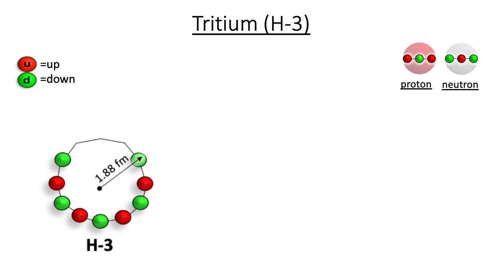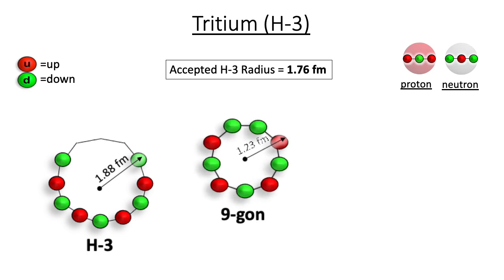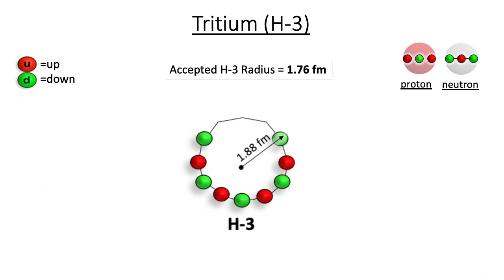Within the alternating quark model, the nine quarks of tritium occupy nine of the twelve vertices of a dodecagon, while the remaining three are unoccupied. This alternating quark structure yields a radius prediction of 1.88 femtometers, a close approximation to the 1.76 femtometer value currently accepted by the scientific community. If we instead arrange the nine quarks of tritium along the vertices of a nine-gon or nonagon, the calculated radius of 1.23 femtometers is too small. This is one reason why linking the same type of quark is not allowed within the alternating quark model. And if we arrange the nine quarks in linear fashion, the predicted radius is too large by a factor of two. The best fit structure for tritium is thus a U-shaped structure where quarks occupy nine of the twelve vertices of a dodecagon.